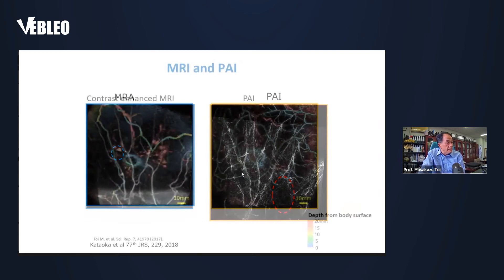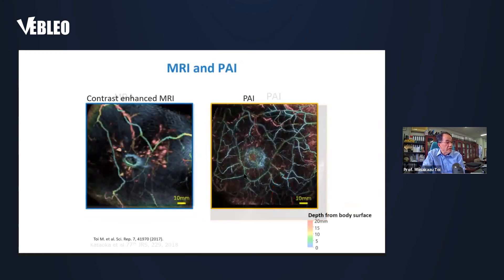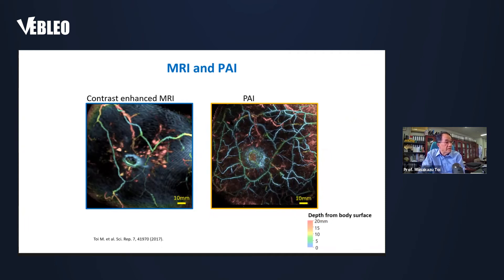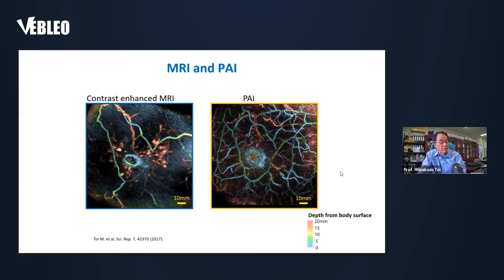This is the breast of healthy volunteers. The left-hand side is contrast-enhanced MRI, and the right-hand side is photoacoustic imaging. We are able to see more fine vessels compared with the MRI view. It's really tiny, fine vessels that are possible to visualize with PAI. The color actually means the depth from the body surface.